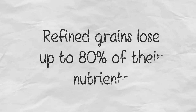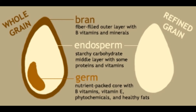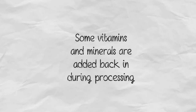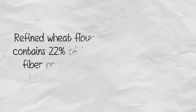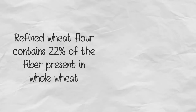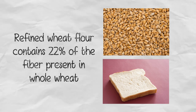Refined grains such as white rice and white flour lose up to 80% of their nutrients after the bran and germ are removed. Some vitamins and minerals are added back to refined grain foods, but many more are not supplemented, leaving refined flour with much lower levels of some nutrients and less fiber than whole grain foods. Refined wheat flour only has 22% of the fiber that is present in whole wheat.